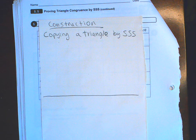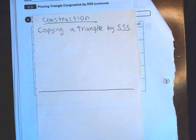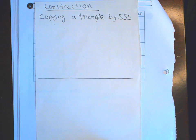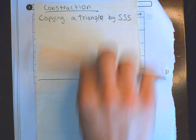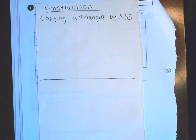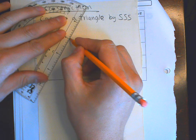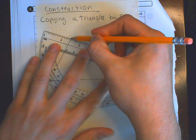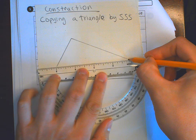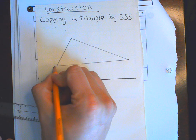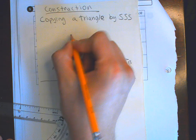Let's go back to page 144. We are going to copy a triangle using the side side side method. First, make sure you have your half sheet of paper already glued. After writing the title 'Construction: Copying a Triangle by Side Side Side,' divide your paper in half. Create a triangle where all three of the sides are different, and label it triangle A, B, and C.